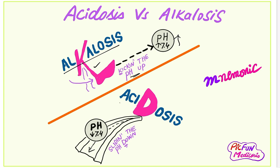In the word 'acidosis,' there is the letter D — D for sliding the pH down. So in acidosis, pH is less than 7.4. You can easily remember the pH level in alkalosis and acidosis by remembering this mnemonic and memorizing this picture in your mind.